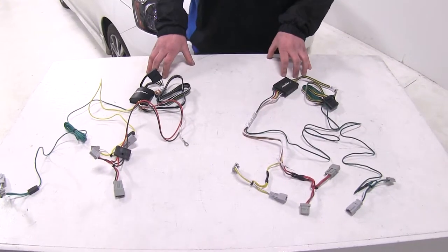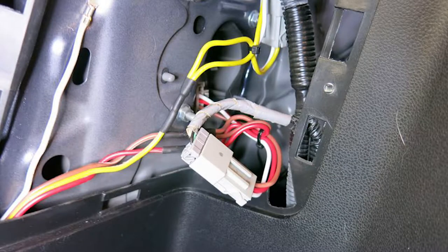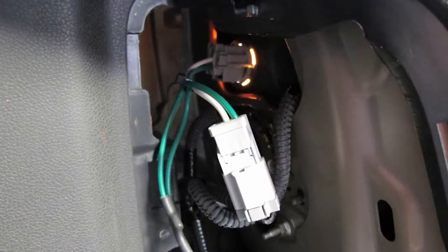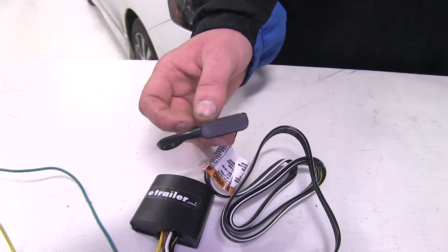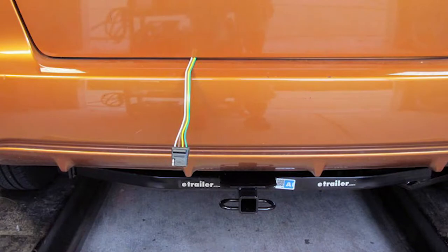Now both of these harnesses are not going to require any power from your battery. They're going to plug directly in line on your factory harnesses. They're both going to provide the same four-pole signals to your trailer and have dust caps on the end to prevent corrosion.